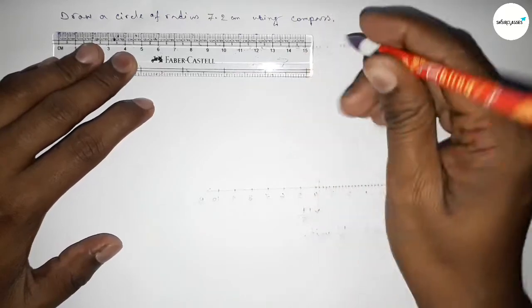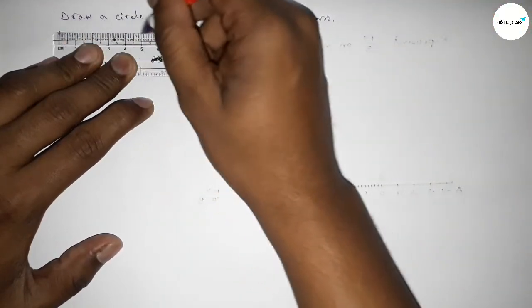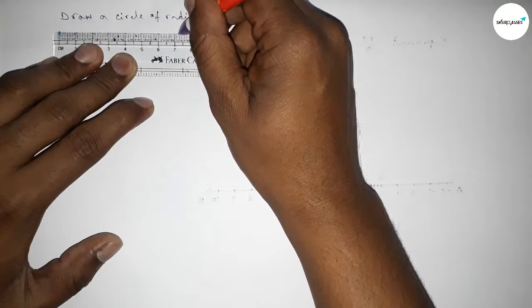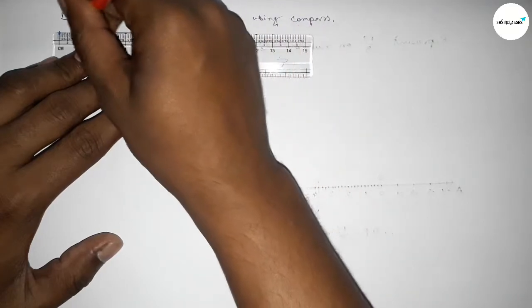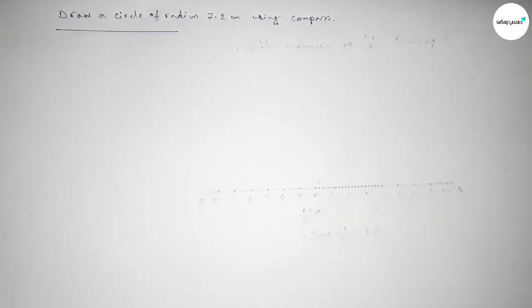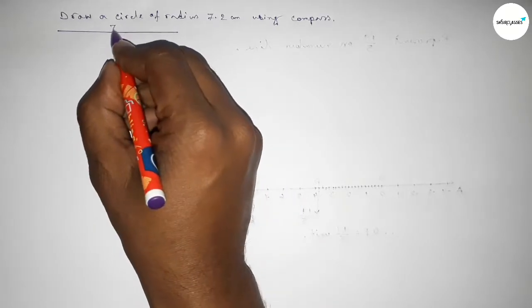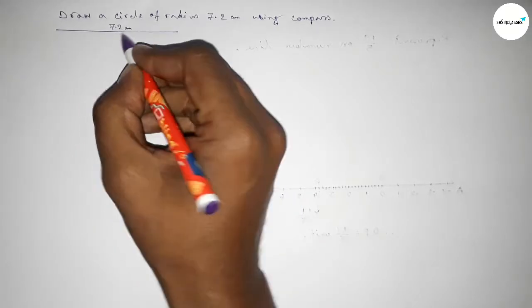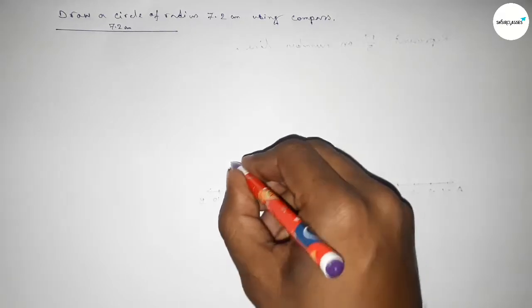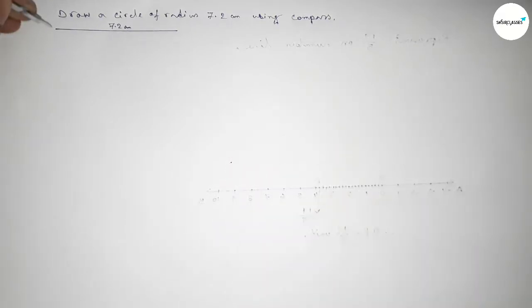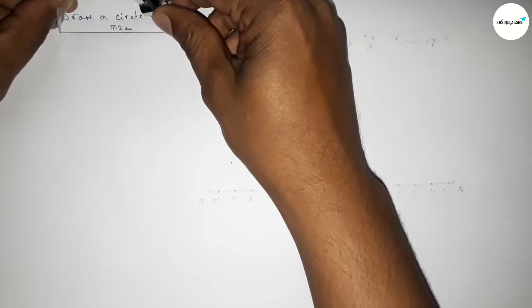Starting from 0, 1, 2, 3, 4, 5, 6, 7, and 7.1, 7.2. So this is 7.2 centimeter. This line is 7.2 centimeter. Now taking a point here, next taking the length 7.2 centimeter.